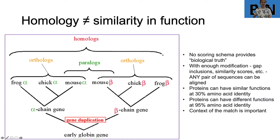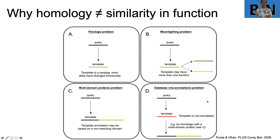Because of this, the context of your matches is really important. It might not be that just one match is enough to determine if your functional assignment is correct — you're going to want to put that in context of the rest of the sequence you're looking at. So again, homology, similarity, and function aren't always the same. We can actually expand that to the databases we're using and how this problem persists there.